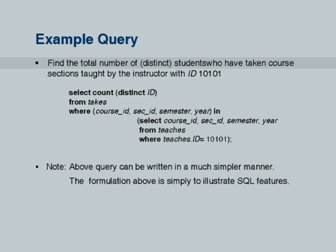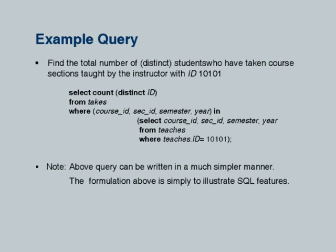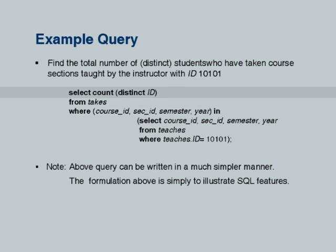Find the total number of students who have taken course sections taught by a particular instructor. We can have an outer query on students and use a nested subquery to check if that student has taken a course taught by this instructor. Here is the takes relation which records which students have taken which courses in which semester, year, and so forth. We are doing SELECT COUNT DISTINCT id — not double counting a student — distinct students who have taken a course taught by this person.